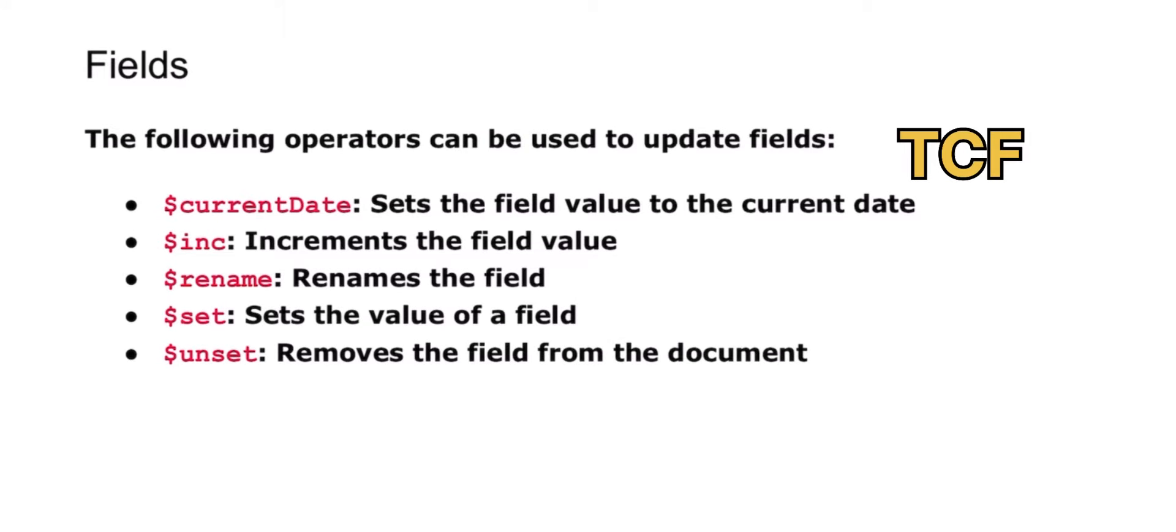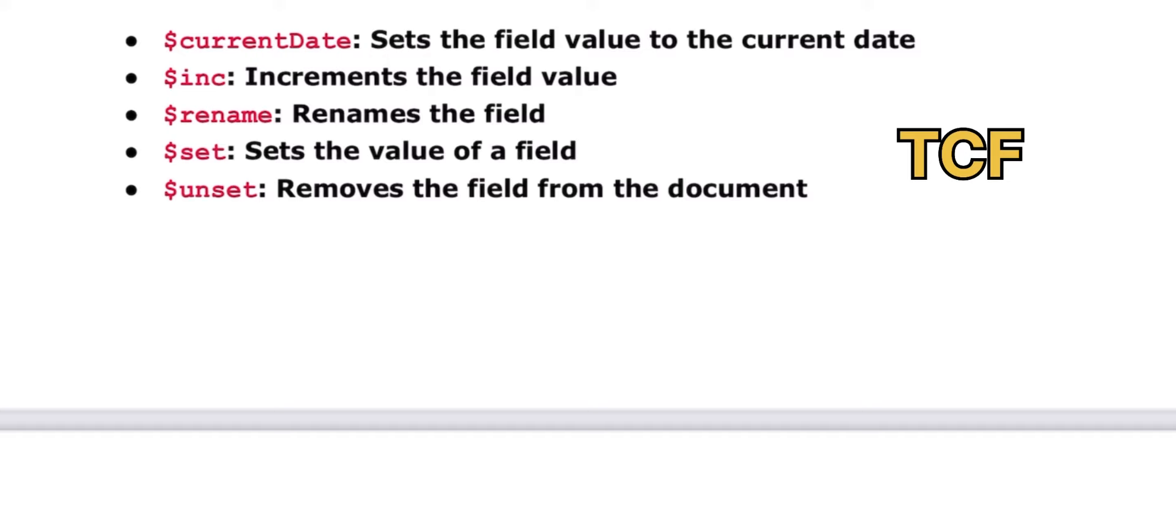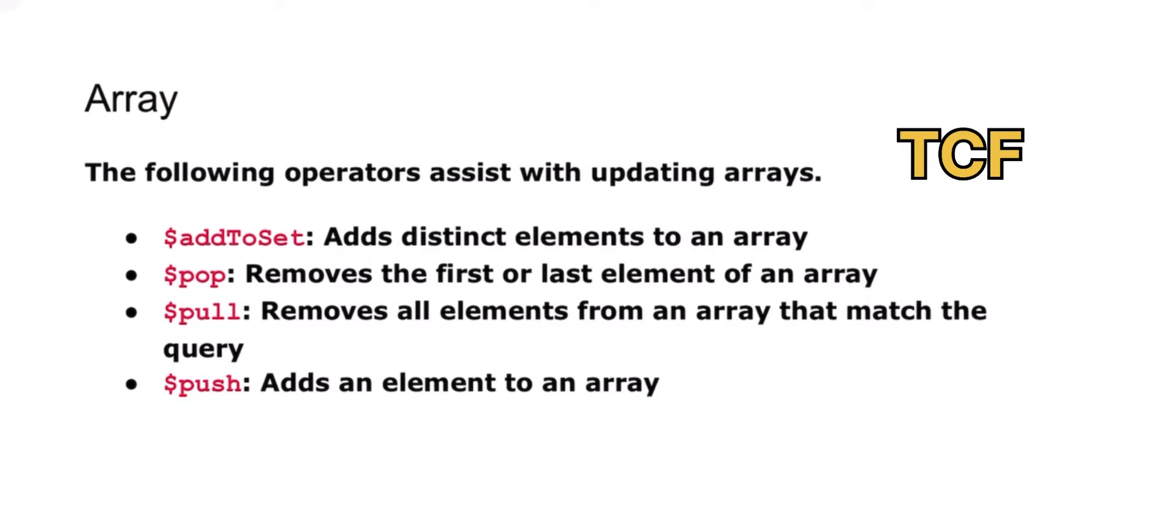The following operators can be used to update fields: $currentDate, $inc, $rename, $set, and $unset. $currentDate sets the field value to the current date, $inc increments the value field, $rename renames the field, $set sets the values of the field, and $unset removes the values from the document.